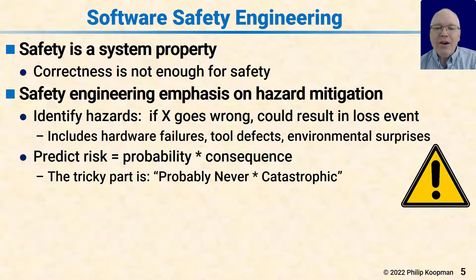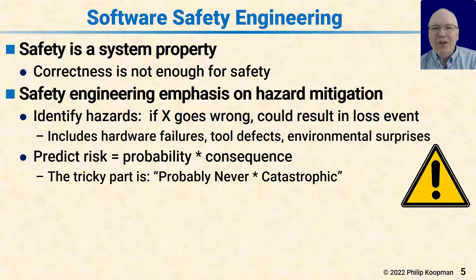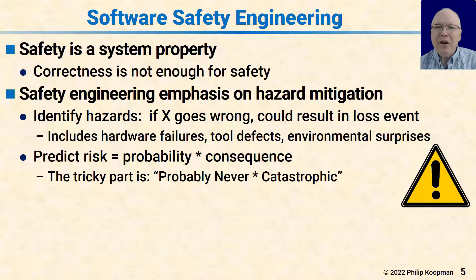The tricky part for all of safety engineering is probably-never times near-infinite consequence. What's zero times infinity? There's a lot of economic pressure to say we're not going to worry about it because it'll never happen. But usually when people estimate the probability, they're a little bit optimistic and things tend to happen that people thought wouldn't happen. So what you really need to do in safety is weight it a little bit more towards the outcome — even if you think it'll probably never happen, if it's a really bad outcome, you still have to find a way to mitigate the risk.